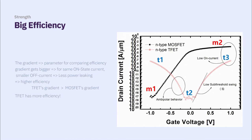So, it could be a more efficient transistor. The gradient of MOSFET is much smaller than TFET. So this transistor makes much lower off current. So TFET is much better to reduce off state power leaking.